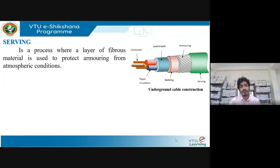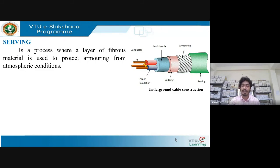Serving involves using a fibrous material such as jute or other material to protect the armoring from atmospheric conditions. At every stage, different materials are used to protect the cable from rust or to enhance its mechanical strength.